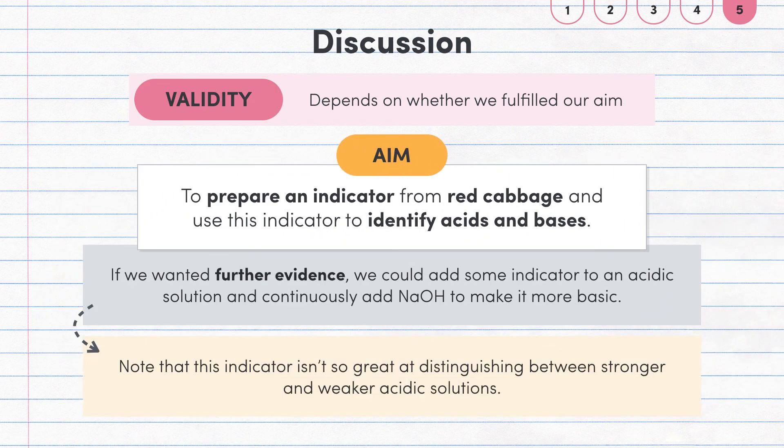Something to note is that the red cabbage indicator isn't so great at distinguishing between stronger and weaker acidic solutions in particular. At pHs between 2 and 5, the red cabbage indicator is a red-y-pink colour and it's a little hard to tell what the exact pH is.